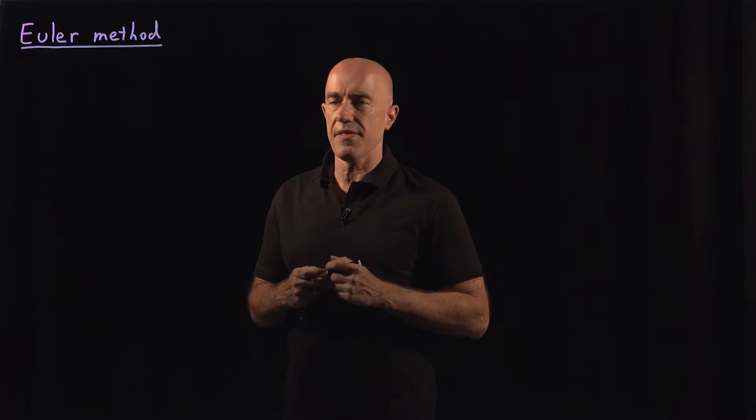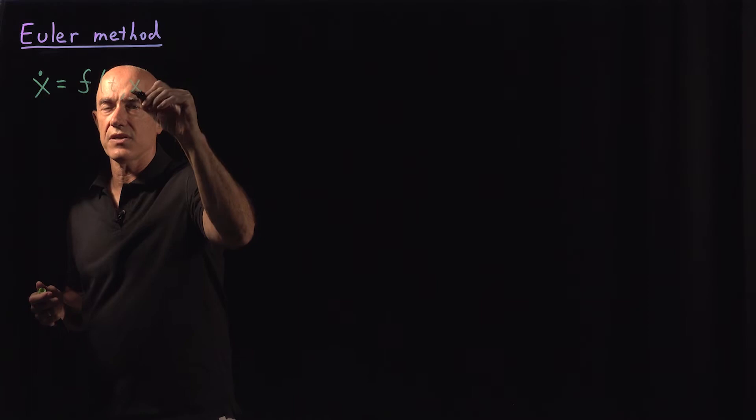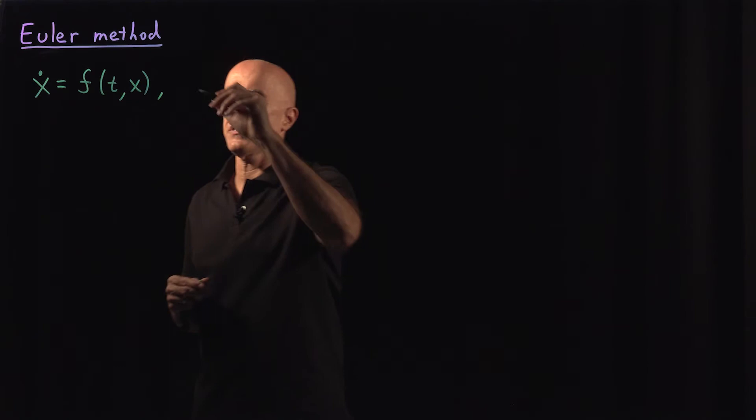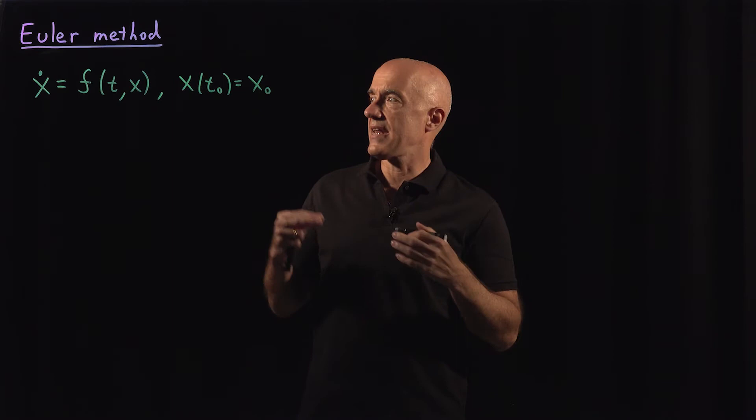We're going to solve a differential equation x dot or dx/dt is some function of t and x. So this function is given. And a first order equation needs an initial condition. So we're going to assume that x at an initial time t naught is equal to x naught. We want to find x as a function of time for t greater than t naught.